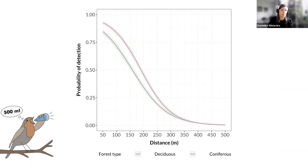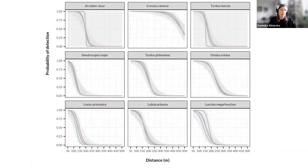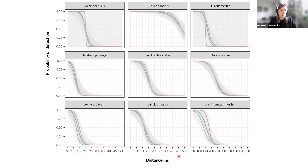Here you can see the probability of detection for the two types of transects. Coniferous forest had slightly higher detection probability than the deciduous one, but this difference is not super big — just to show how it was in our case. But if we divide it into species, you can see that detectability — the probability of detection — depended very much on the species. For example, taking the common cuckoo at 75% detectability, it was still highly detectable at even 450 meters. But in contrast, taking the great spotted woodpecker at the same 75% probability of detection, it was dropping above 100 meters.